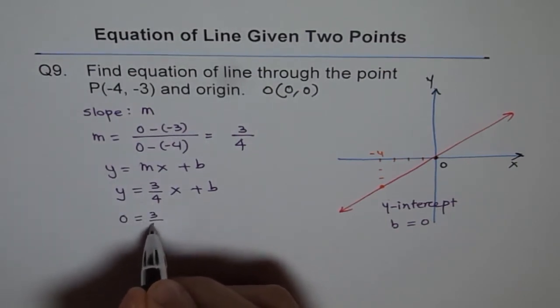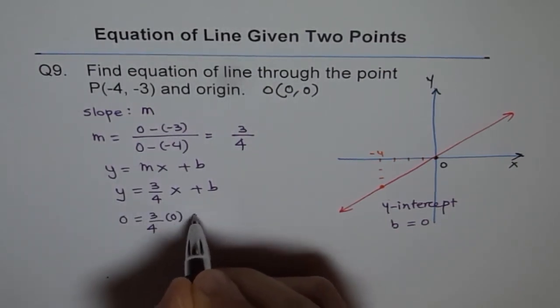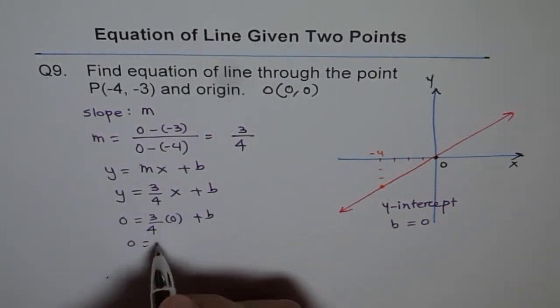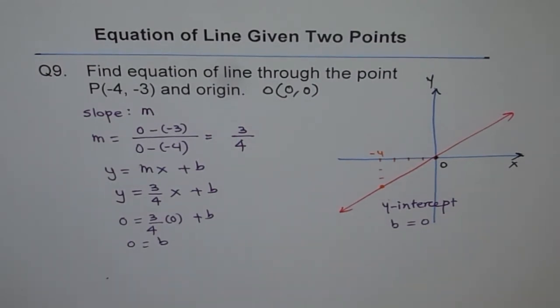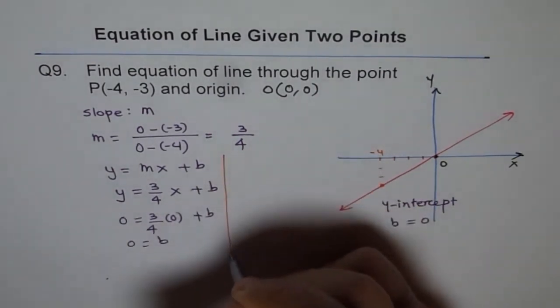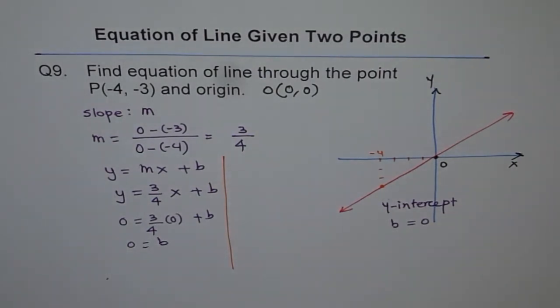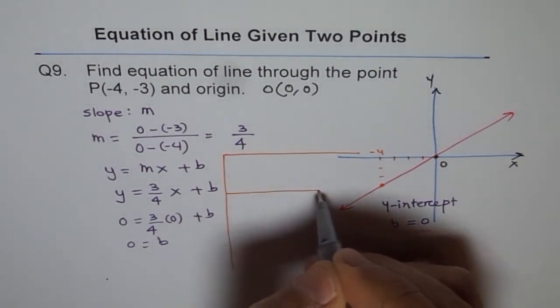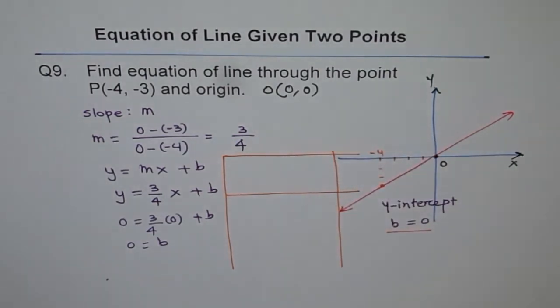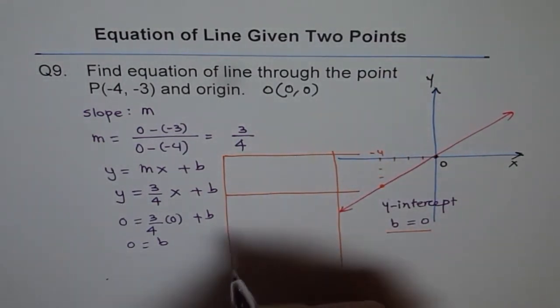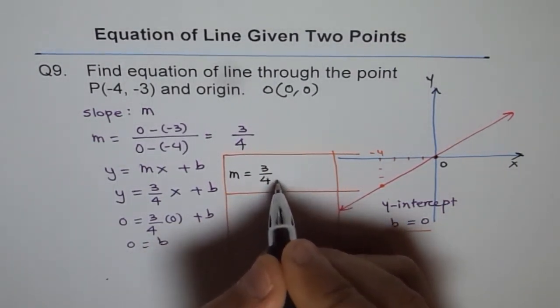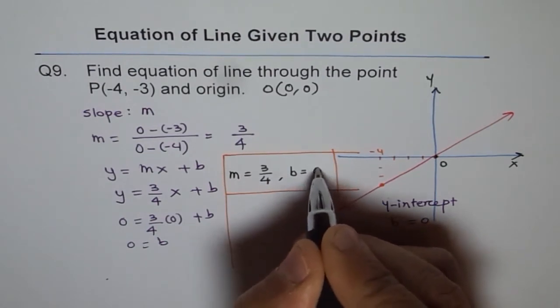If we do so, we get 0 equals 3 over 4 times 0 plus B. 0 equals anything times 0 is 0. So 0 equals B. So we get the expected answer. So we know Y-intercept is 0 as predicted. So let's write down what we have.